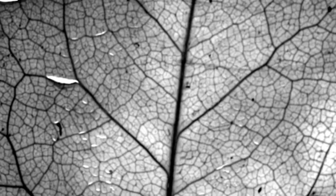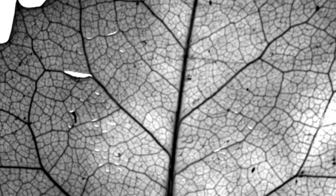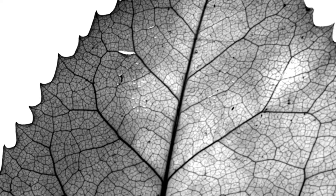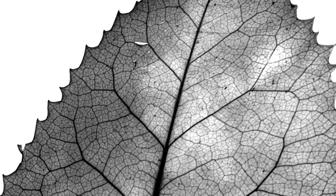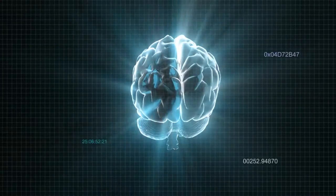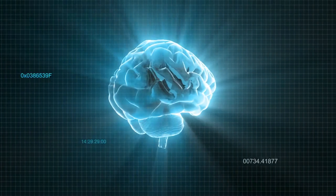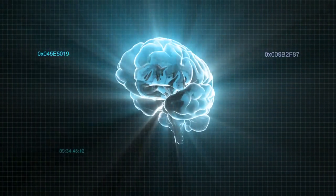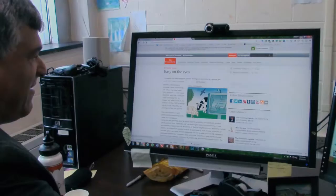If you look at a well-preserved fossil leaf or a modern leaf, you will see thousands of veins in each one. It takes you like two hours to describe a leaf, even after you're trained.